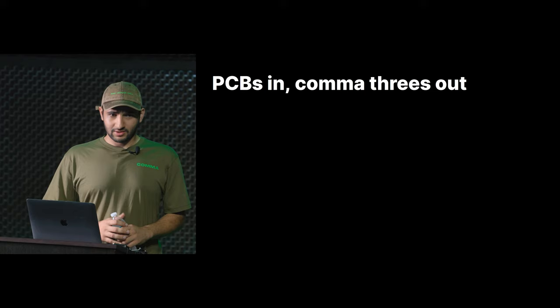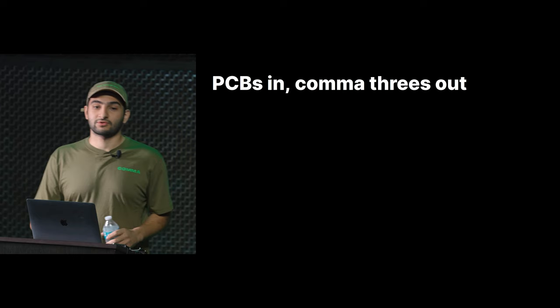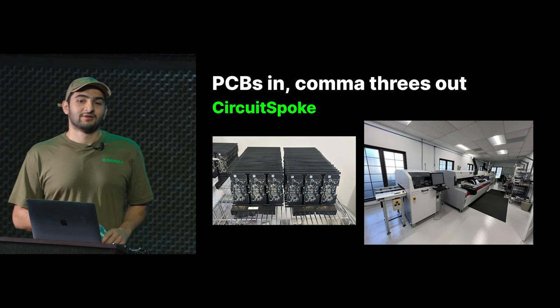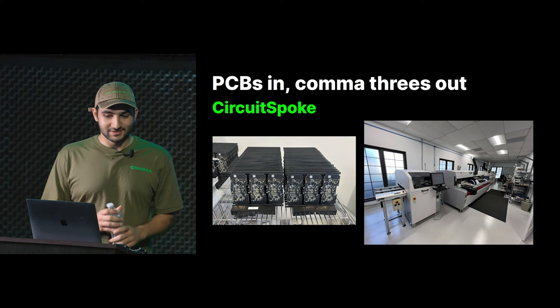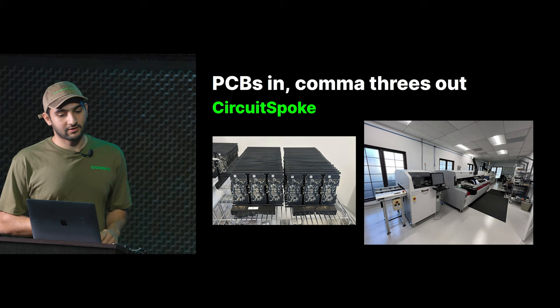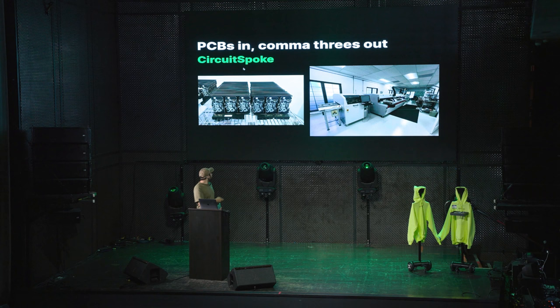The way we do this is we take PCBs into our office and Comma 3s come out. The first step in this process is something called CircuitSpoke. The original Comma 3s were made by a manufacturer called CircuitHub. We replaced them with something called CircuitSpoke that's in our office. They come in with bare PCBs, and then they run through this line. We have a jet printer, a pick-and-place, an oven, and some fancy AOI.